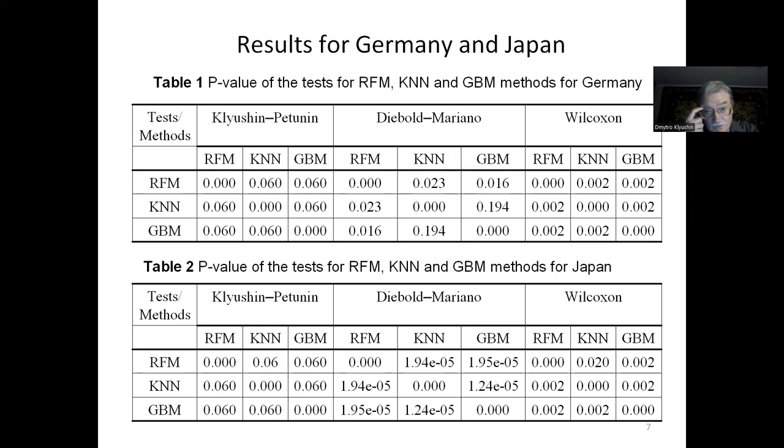Except in the Diebold-Mariano test, when the p-value is more than 0.05 in the case when we compare models k-NN and gradient boosting. In all other cases, the models are different.